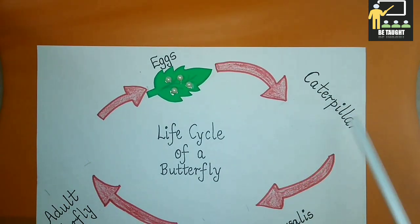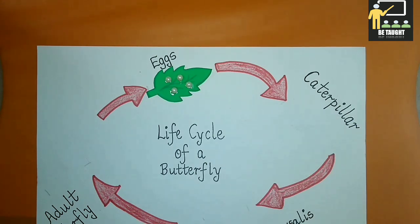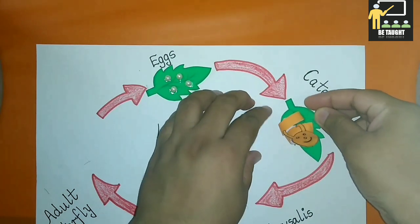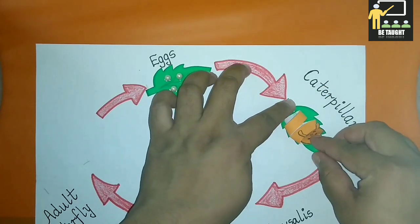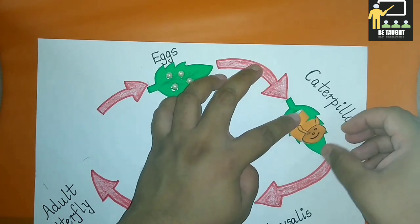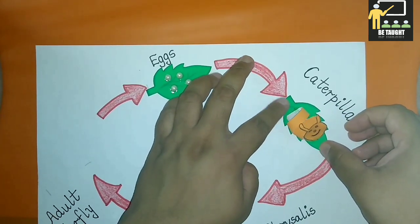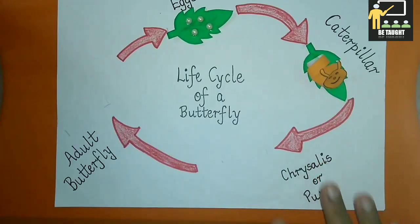The second stage is the caterpillar. The caterpillar first feeds on the egg shell from which it is born. It then starts feeding on the leaves and starts to grow. The caterpillar sheds its skin several times so that it can grow. This process is known as moulting.